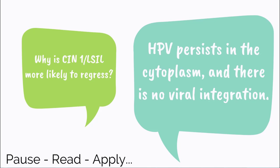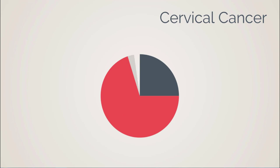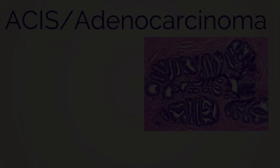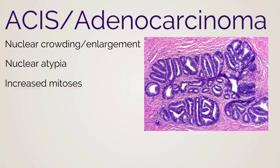While CIN refers to squamous abnormalities, there are a subset of abnormalities from glandular disease. While squamous tumors account for 70% of cervical cancers, adenocarcinoma accounts for 25%. Glandular cervical neoplasia includes adenocarcinoma in situ and adenocarcinoma. Abnormalities in adenocarcinoma include nuclear crowding and enlargement, nuclear atypia, and increased mitoses in the glands. HPV also plays a primary role in adenocarcinoma, with HPV 16 in 36% of adenocarcinomas and HPV 18 in 37%.